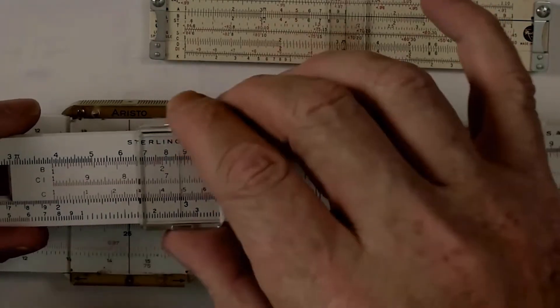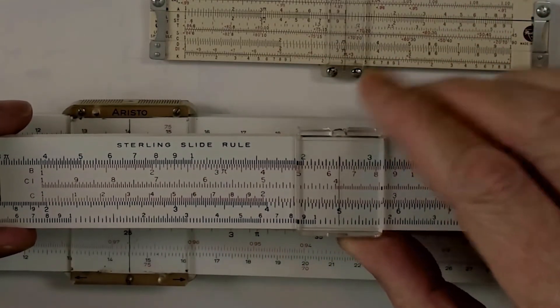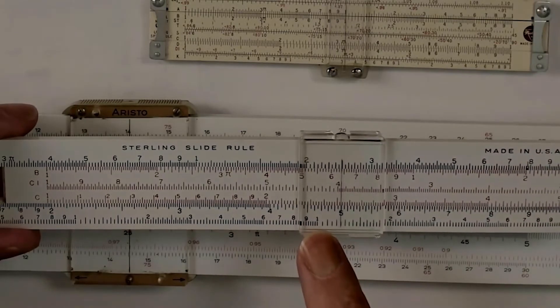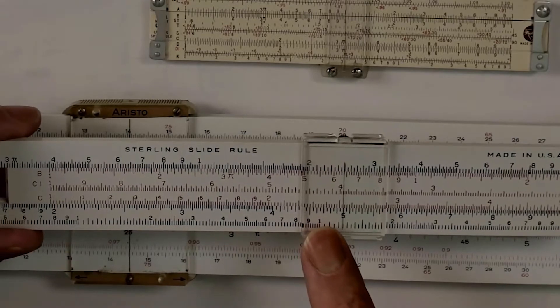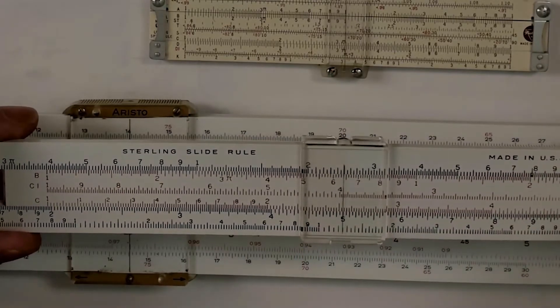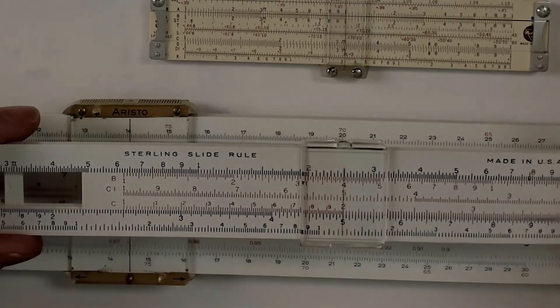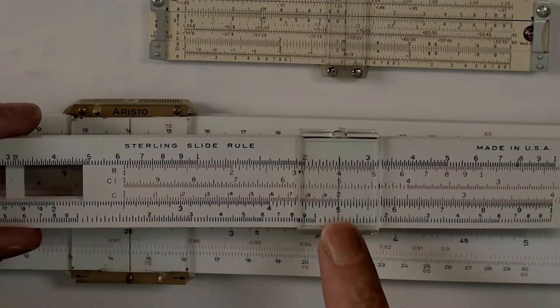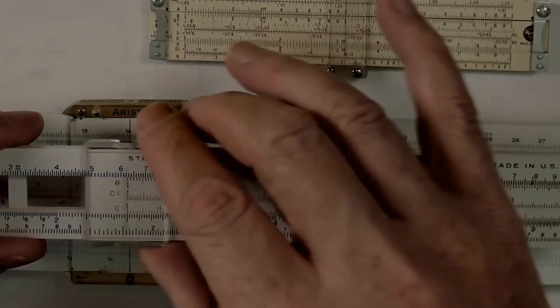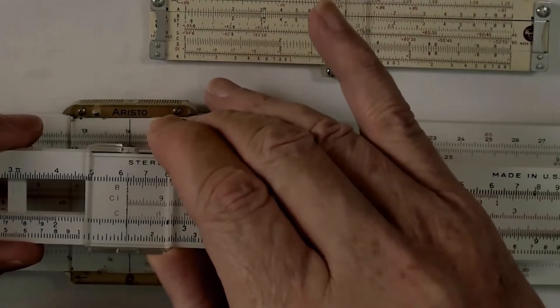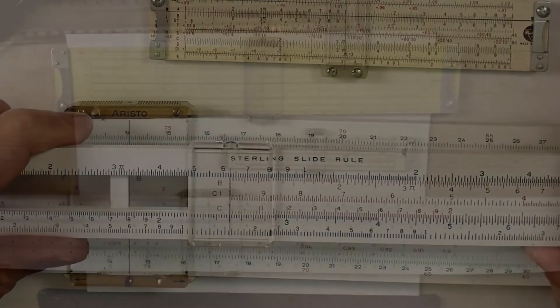What we'll do with division is take the number that we are dividing something into and put that on the bottom scale, or the scale on the stator, in this case the D scale. And then what we're doing to it, we will put directly above it. So, for example, in this case we're dividing 5 by 2, then we read back to the index, which is the 1 on the C scale, and we get our answer, which is 2 1/2.